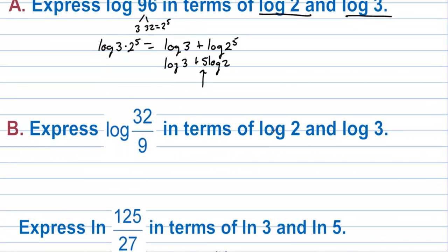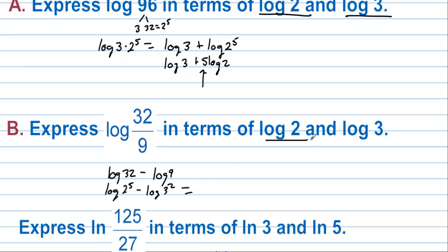Express log(32/9) in terms of log 2 and log 3. We write this as log 32 minus log 9 — that's log of 2 to the 5th minus log of 3 squared. Bringing the powers down in front gives 5 log 2 minus 2 log 3.